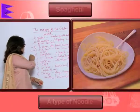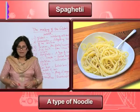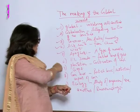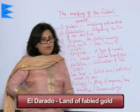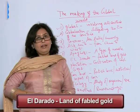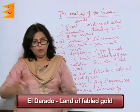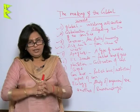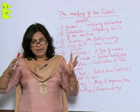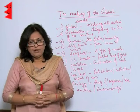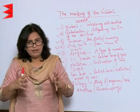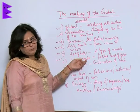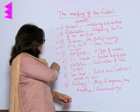Next is 'spaghetti,' which is in fact a type of noodle. Next is 'El Dorado.' El Dorado is a land of fabled gold — that is an imaginary world wherein lots of gold, riches, wealth and prosperity were found. That is El Dorado.